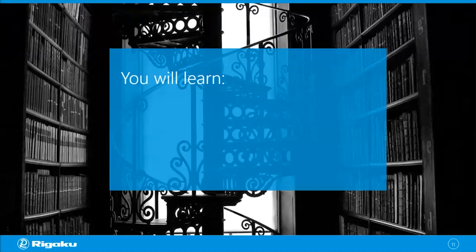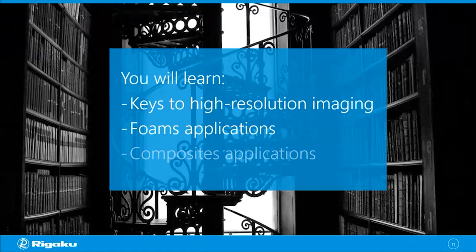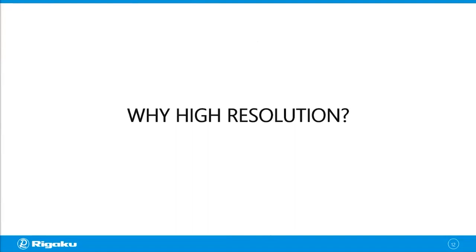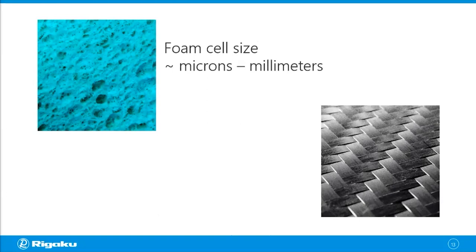In this webinar today, you will learn some keys to high-resolution imaging. We're going to talk about high-resolution imaging because it's important for foams and composites applications, and we will look at a number of application examples. Why do we need high resolution to look at foams and composites? When you think about foams, in many cases people want to look at the cells or pores, and the cell size generally varies from microns to millimeters. For composites, those materials usually have fibers — glass or carbon — and the fiber diameter varies from 5 to 30 microns.